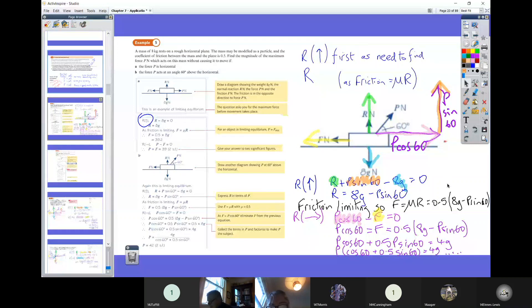I think the key bit is when we resolve horizontally, that's when the friction will come into play. Given that the normal reaction is a component of the friction, you need to know that first. So you're going to choose to resolve perpendicular to the horizontal surface first.